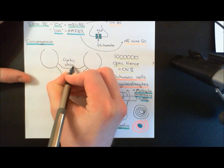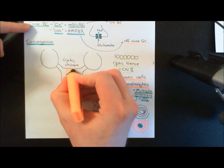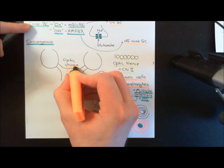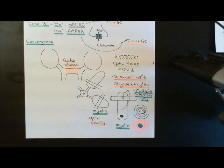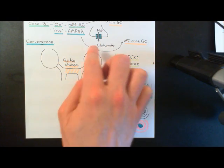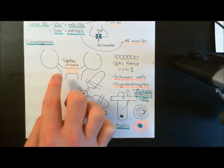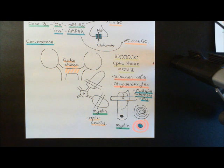The optic chiasm is the connection between the optic nerves on the two sides of the head. We've got the right optic nerve and the left optic nerve — imagining we're viewing from above. Some of the axons from some of the ganglion cells are going to cross in the optic chiasm from the right eye to the left side, and also from the left eye to the right side. These will be the fibres from ganglion cells in what are known as the nasal hemiretina portion.